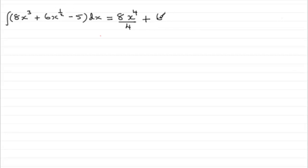All we do is add 1 to the power, so we've got 1 added to the half. Don't write 1 and a half but write it as 3 over 2. And then you divide by that new power, 3 over 2.